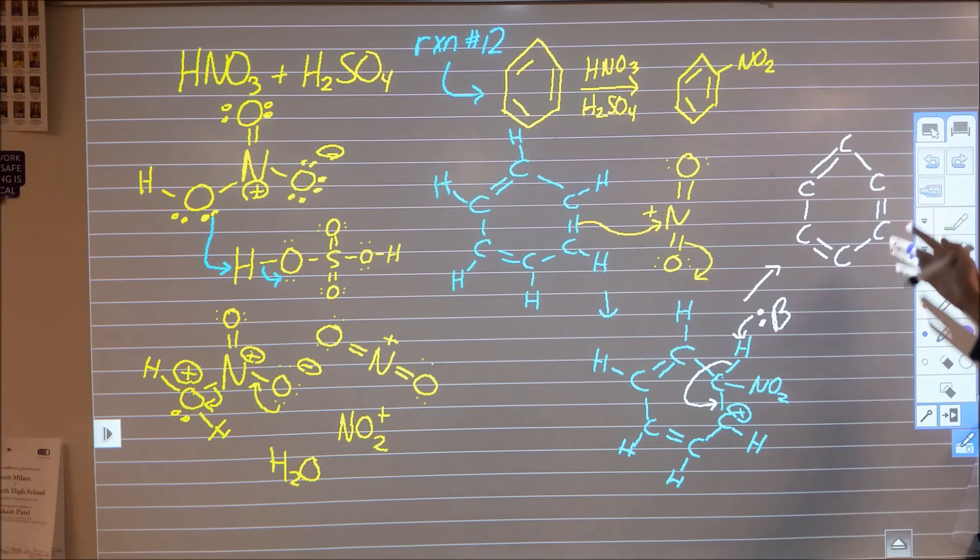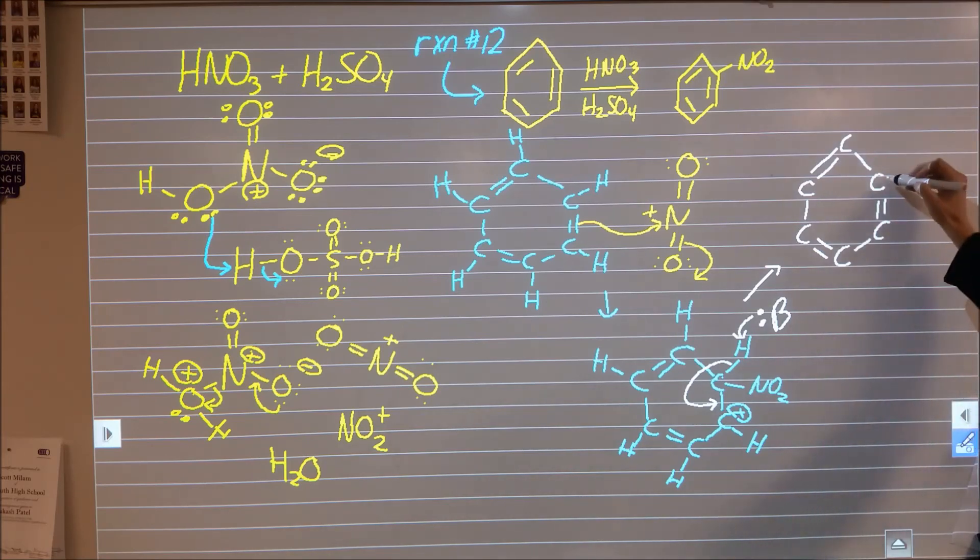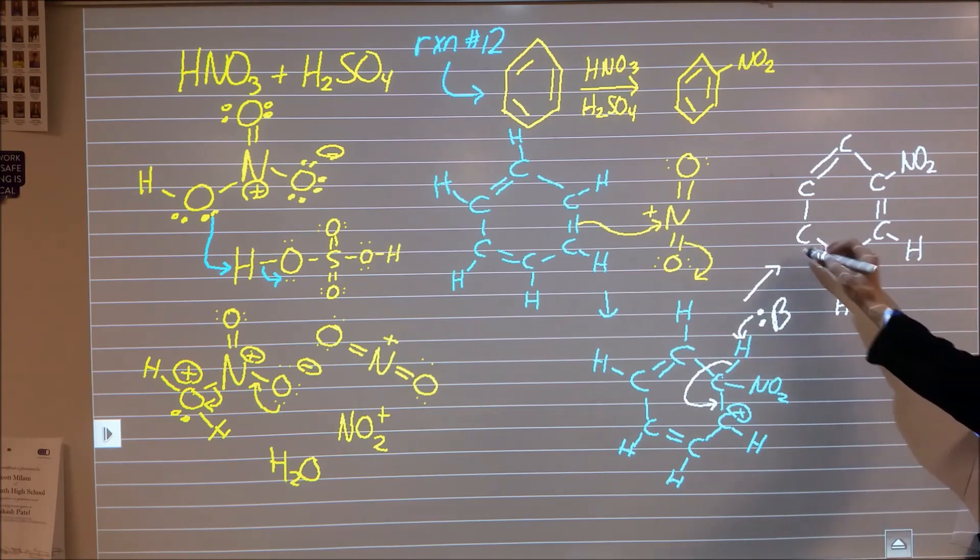our original benzene type structure but now in place of a hydrogen we have an NO2 at that spot and we still have our five remaining hydrogens that we had before.